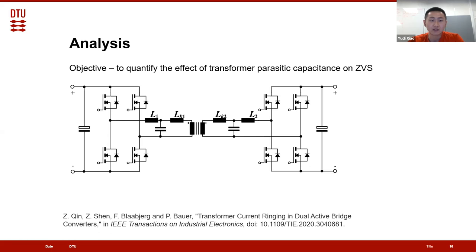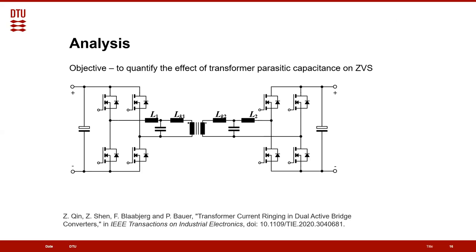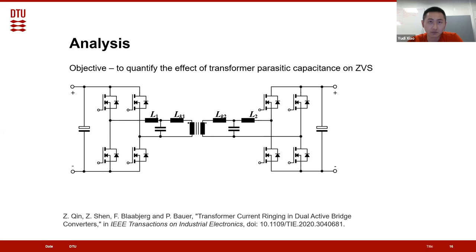The objective of the analysis is to quantify the effect of the parasitic capacitance so we can use these numbers to design the inductance. In the model, we considered the leakage inductance of the transformer lk1 and lk2, the transformer's parasitic capacitance, and the two external inductances l1 and l2. What we did not consider in this modeling — and which might also be very important — is the parasitic capacitance from the primary winding to the secondary winding. From our recent work it shows this does have some influence, and a reference is attached.